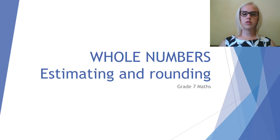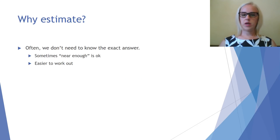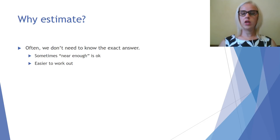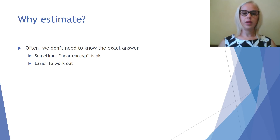This video on whole numbers looks at estimating and rounding. So why would we estimate? Often we don't need to know what the exact answer is. Sometimes near enough is okay, like if you're trying to work out how many pizzas to order for a special lunch day — the exact number of slices that people are going to eat doesn't matter. Near enough is okay, and often it's far easier to work out.